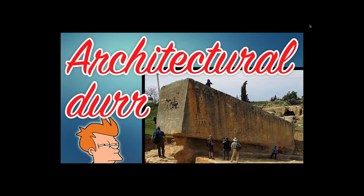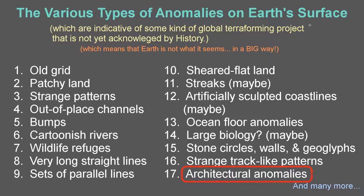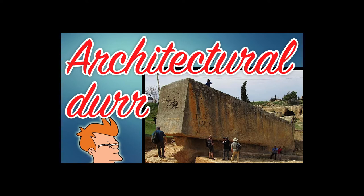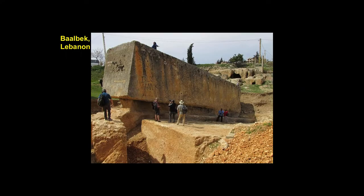Hello, today we discuss architectural durr, or strange man-made gobbledygook. This is the final installment in this mini-series, and let's start with this guy in Baalbek, Lebanon. First off, we have these square holes — one, two — there's some on the back here. Before we jump into the holes, I want to discuss the general idea behind it.